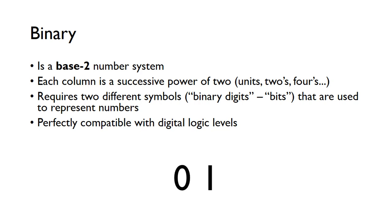Binary works on exactly the same principle, but it's just a base two number system. Each column is worth a successive power of two — units, twos, fours, eights, sixteens, thirty-twos, and so on. Because it's only base two, we only need two different symbols: zero and one. We call these binary digits, or bits — that's where the word 'bits' comes from. This ends up being perfectly compatible with the zeros and ones, or true and false, that describe our digital circuits.